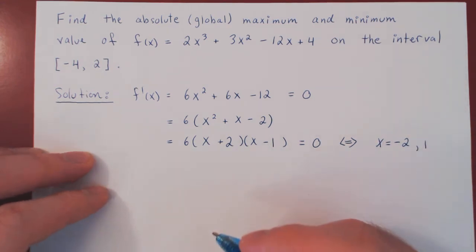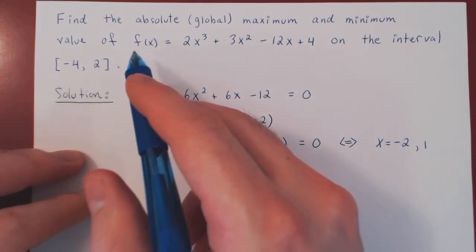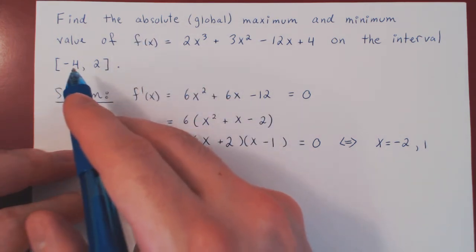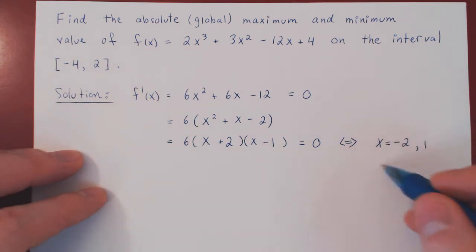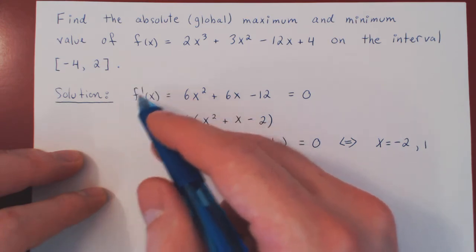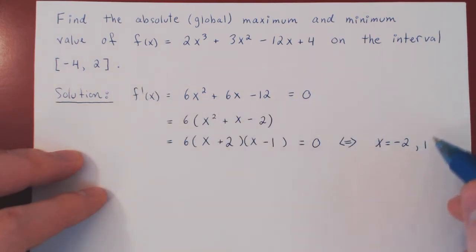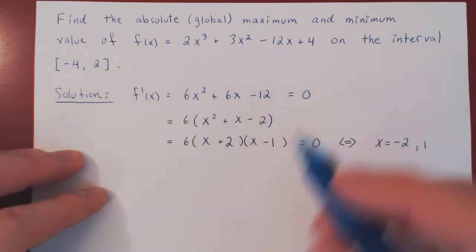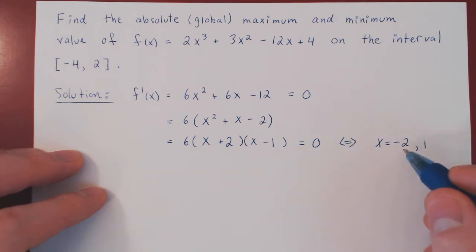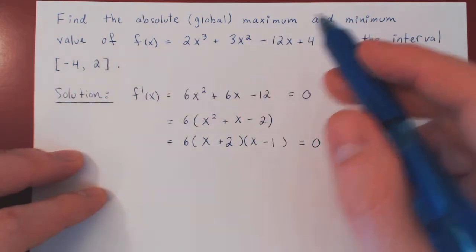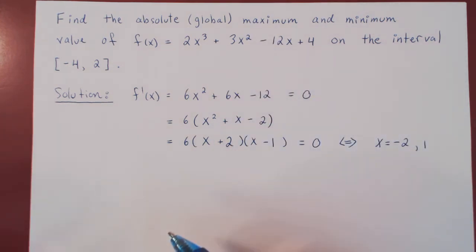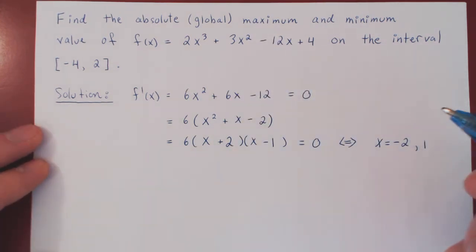Now we're essentially done. We have to check the value of the function at the two endpoints — negative 4 and 2 — and at our two critical points only. As we've said, the derivative will never be undefined, so we only get critical points from the derivative being 0. Which of these four values gives us the maximum and minimum? The only way to find out is by inspection, so let's construct a table of values.